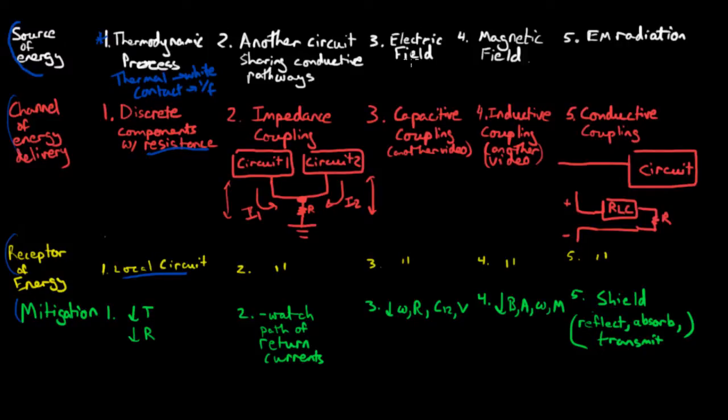Third, there's the electric field, a local electric field as a source of energy. The coupling channel is capacitive coupling, and I'm going to cover that in another video. The mitigation techniques would be to reduce the frequency of the electric field source, the varying source, reduce some resistances, and that will be covered in the video. The coupling capacitor between you and the problematic circuit, as well as the voltage in the problematic circuit. The only one you really have a lot of control over is the coupling capacitance.